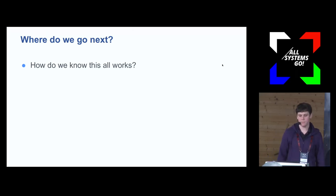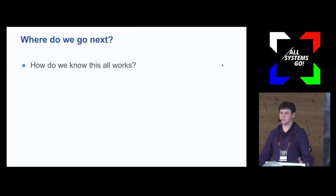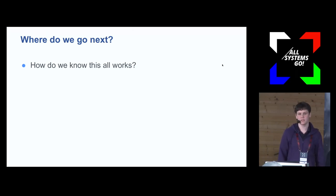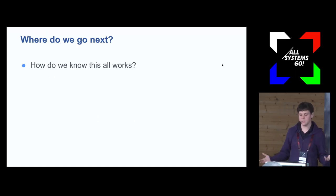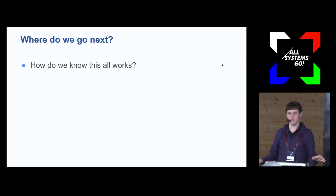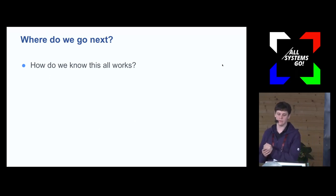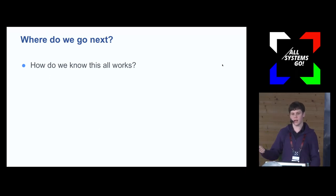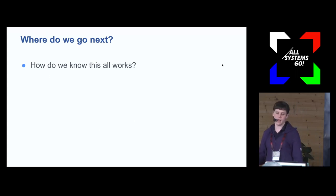Getting close to wrapping up — there are aspects of resource control we still care about and haven't figured out. One is: how do we know this all works? If the machine is underutilized, none of the resource control takes effect — everything we use is work-conserving. So if you make a change, you only see effects in outlier cases. It's very hard to validate that our configurations are behaving correctly.